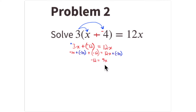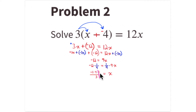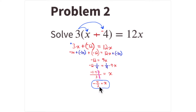Now get rid of the 9 by multiplying by its multiplicative inverse, 1/9. So x = 1/9 times -12. Factoring: it's -1 times 12, and 12 is 4 times 3. With 9 being 3 times 3, the 3s cancel, and you're left with x = -4/3.